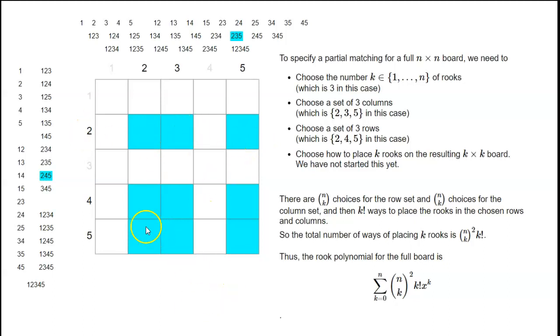We have to place a rook in every row. There's three choices for the first row, two choices left for the second row, and one choice in the third row. So three times two times one is three factorial ways to place three rooks on this three by three blue board.